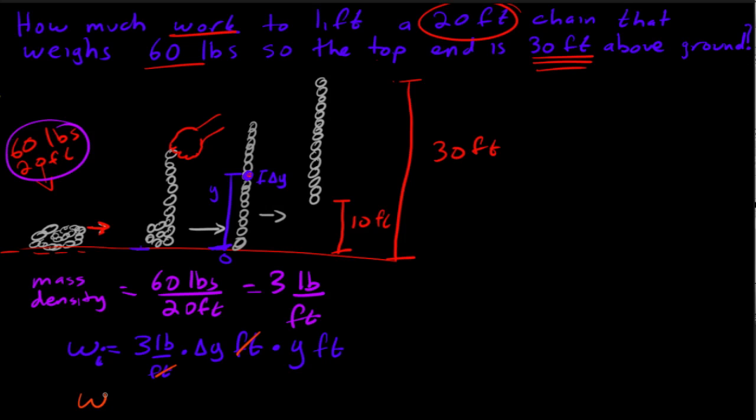So then the total work, and let's forget about this part right here, because I'm going to explain that in a minute. To take the chain from coiled to right off the ground is going to be the integral from zero to 20, because that's how long the chain is, of three y dy.